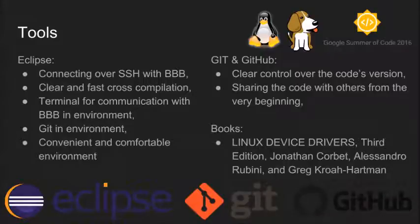Now I will tell you something about the software that will help in the realization of my tasks. I'm using the Eclipse environment. Its main advantages are: connecting over SSH with BeagleBone Black, clear and fast cross-compilation, a terminal for communication with BeagleBone Black, and a Git environment. Another important element is Git and GitHub, which gives us clear control over the code's version and enables sharing the code with others from the very beginning.